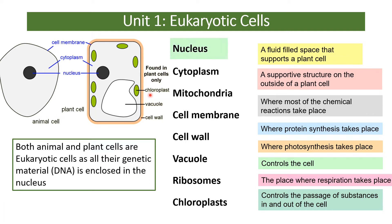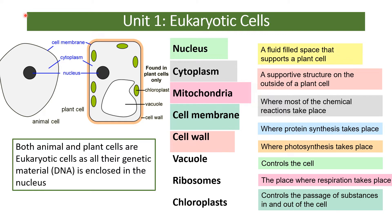To summarise organelle functions: the nucleus controls the cell. The cytoplasm is where chemical reactions take place. Mitochondria — found in both cells but too small to see under a light microscope — are where respiration takes place to release energy. The cell membrane controls what goes in and out. The cell wall is a supportive structure on the outside of plant cells. The vacuole is a fluid-filled space that keeps plant cells turgid. Ribosomes are where protein synthesis takes place. Chloroplasts are where photosynthesis takes place in plant cells above the ground.